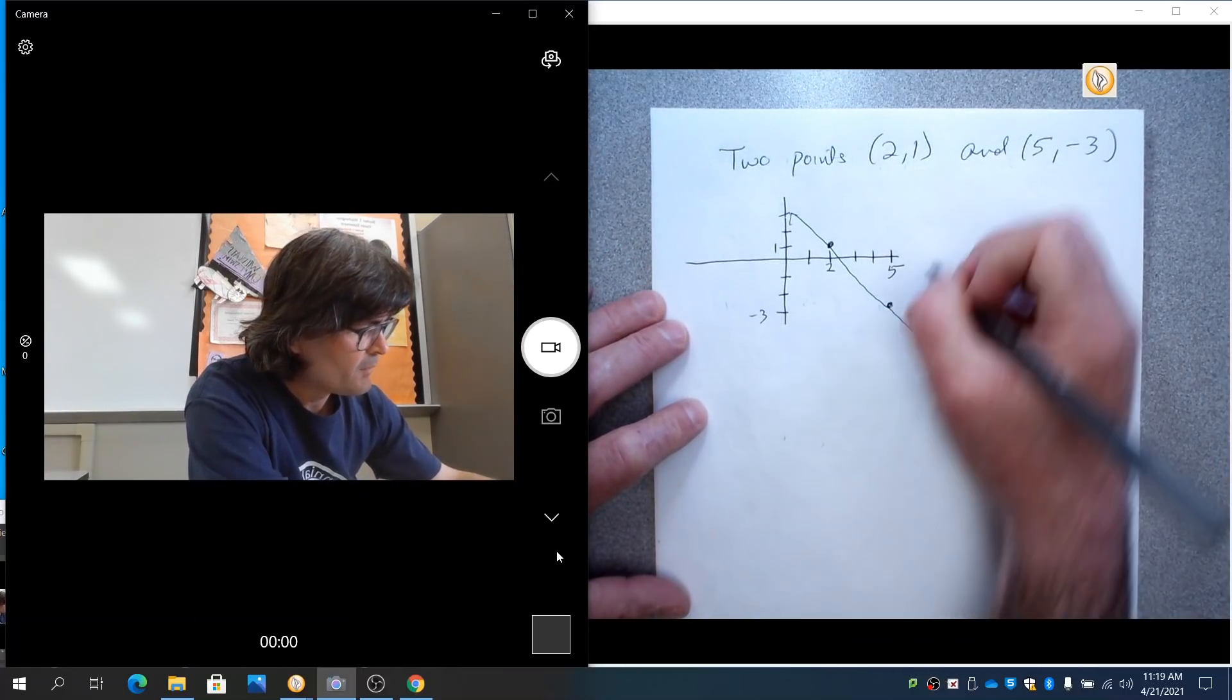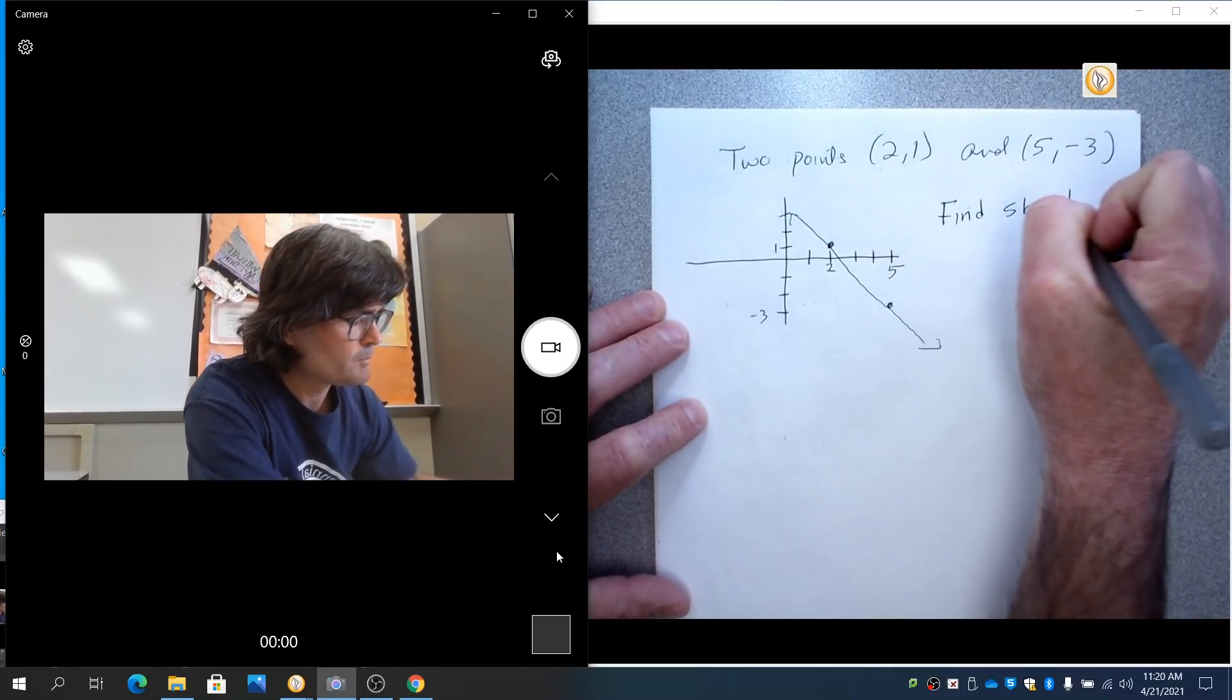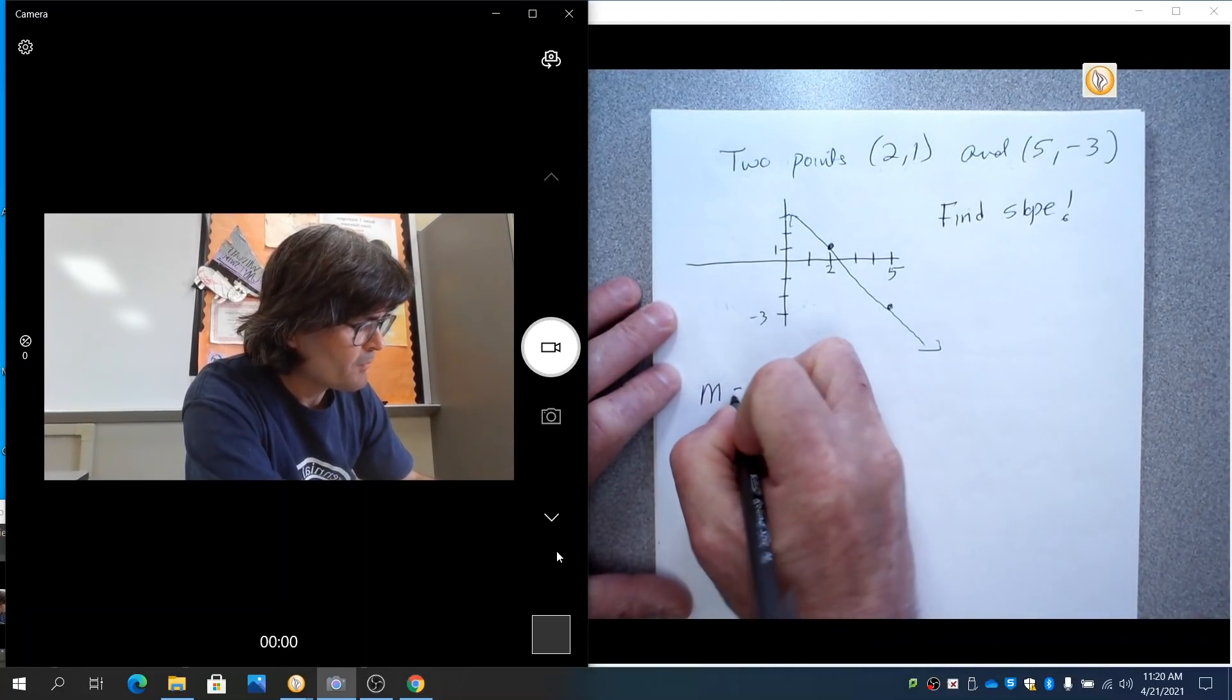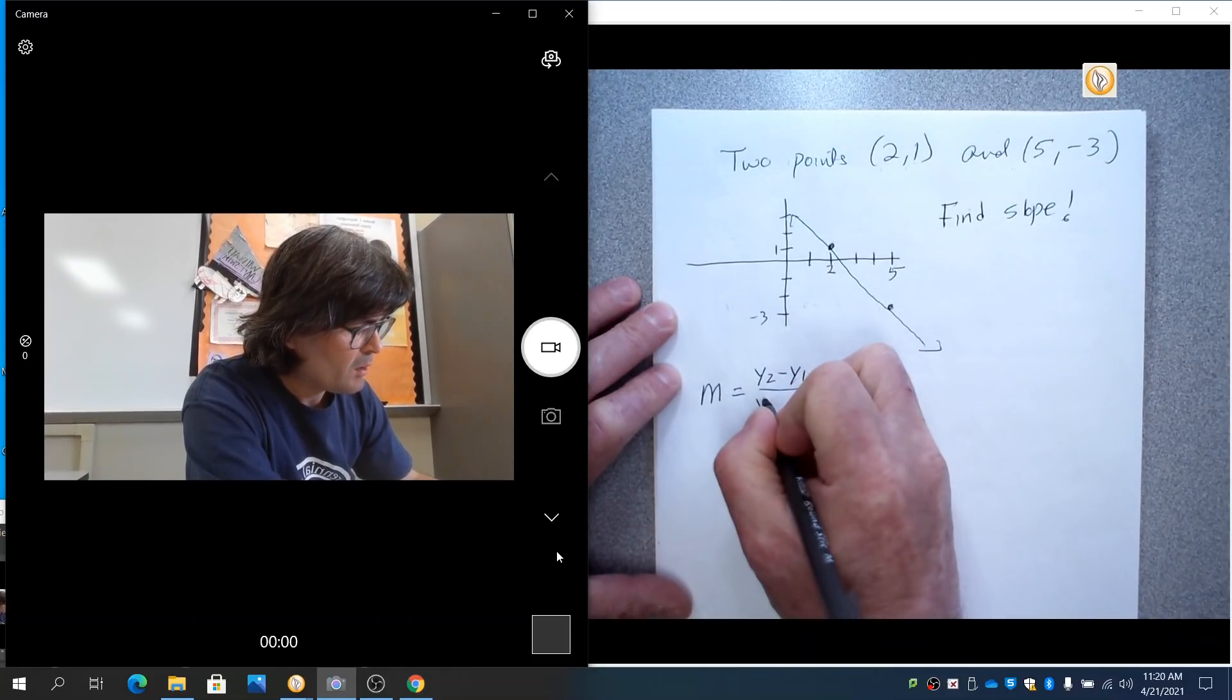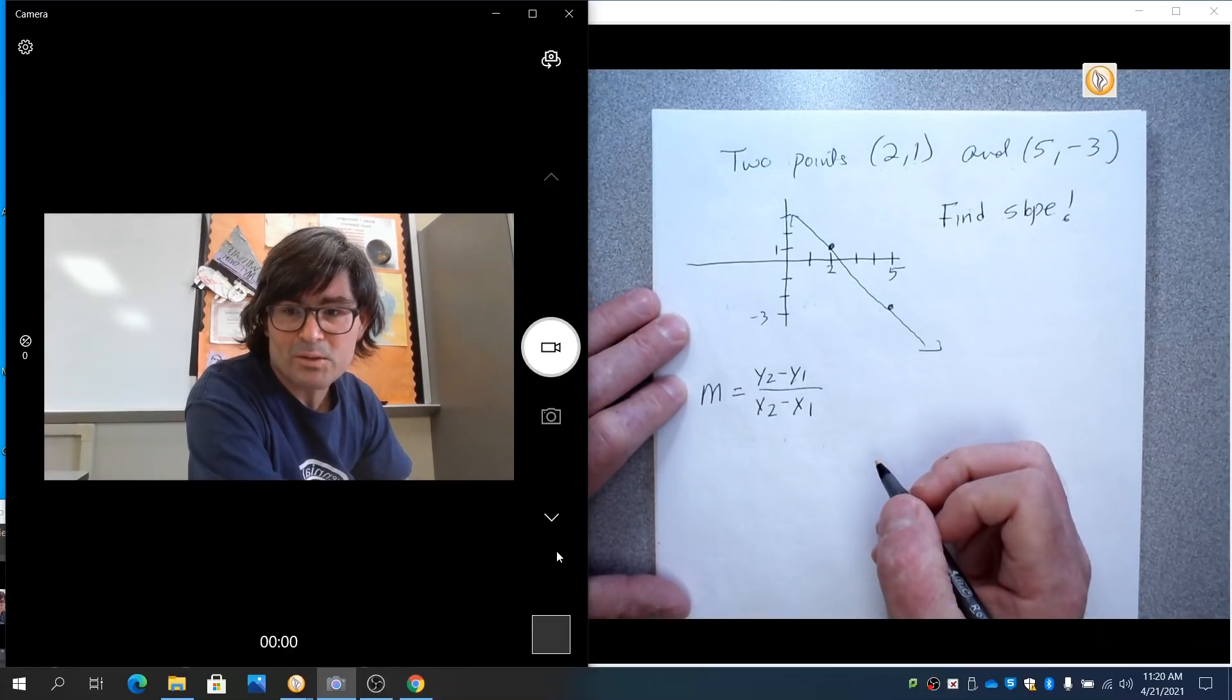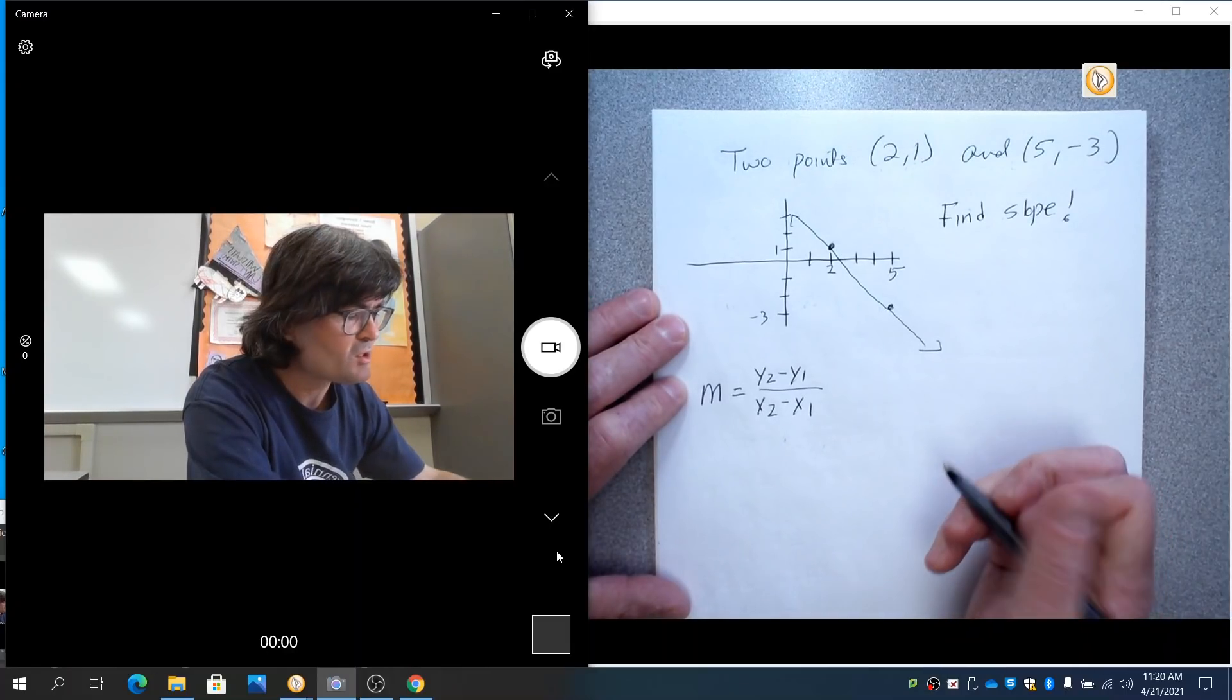The first thing is find the slope. So that's going to be represented with an M. And we're going to do one Y minus another Y over one X minus another X. And it doesn't matter which one you start with, but it does matter that you stick with the same start and end.